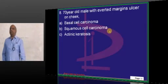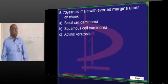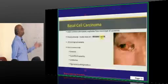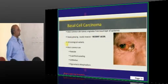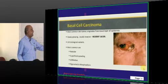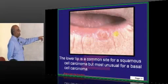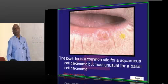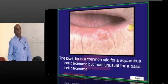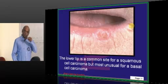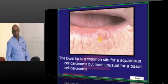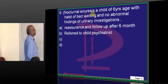A 70-year-old with inverted, marginated ulcer on the cheek - which one? Classically, rolled and raised edges is the name given for basal cell carcinoma. It has nodular, superficial spreading varieties. But if it is on the lower cheek, the most common tumor is not basal cell. The rolling edges and heaping edges are clues towards basal cell carcinoma.